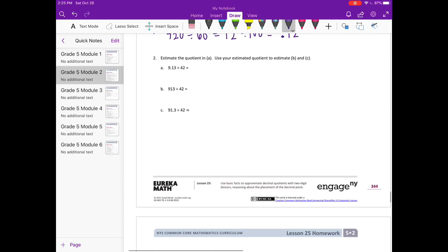Number 2: Estimate the quotient in A, then use your estimated quotient to estimate B and C. 9.13 divided by 42. So 9.13, there's really nothing I can do with 9 divided by 4, but I could do 10 divided by 5. So let's make this 1000.